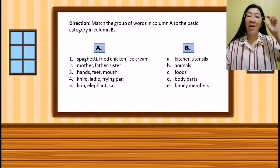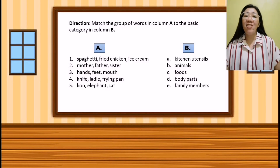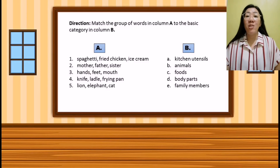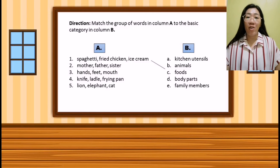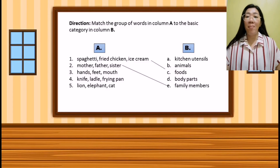Alright, time is up. Now let's check your answer. Our first group of words are spaghetti, fried chicken, and ice cream — they are foods. Next, mother, father, and sister — they are family members. Next, hands, feet, mouth — they are body parts.